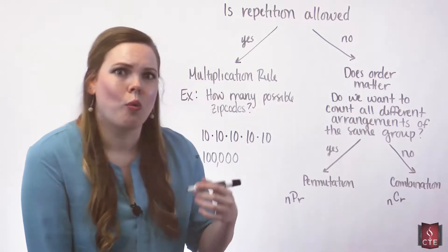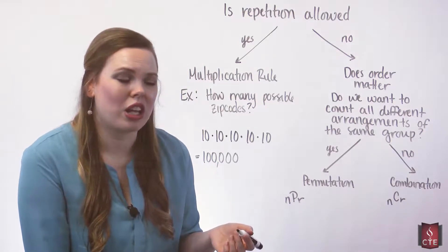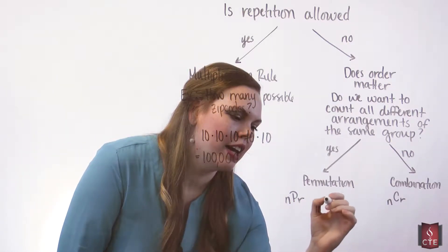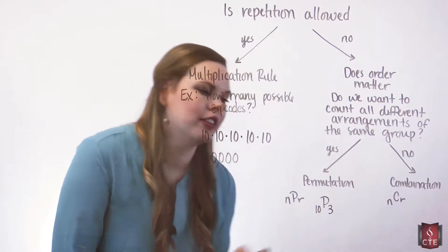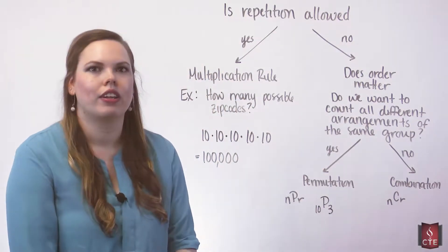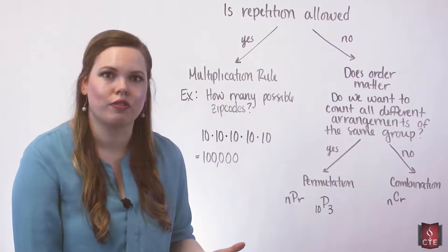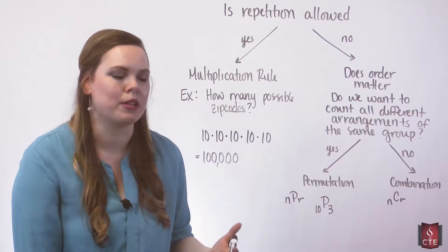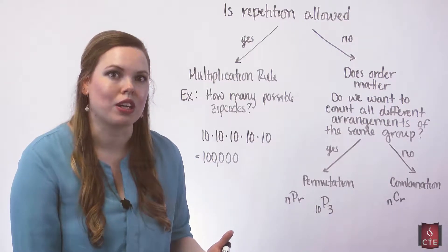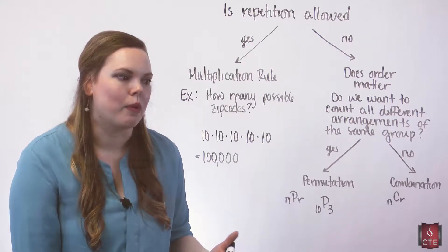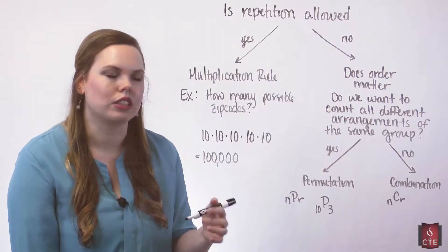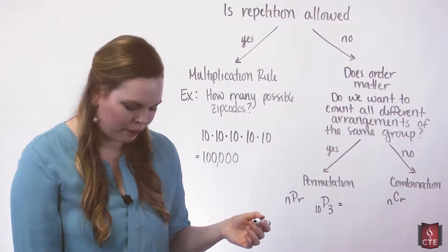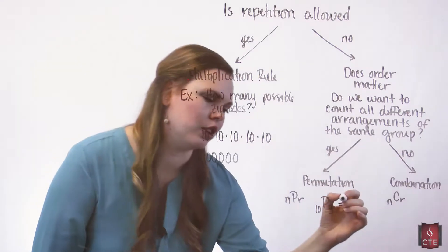There are 10 students and we're selecting three of them, so this would be 10P3. We're selecting from 10 students and choosing president, vice president, and secretary — how many different groups can we come up with? That would be 10P3, since they're assigned different roles. This ends up being 720 ways.